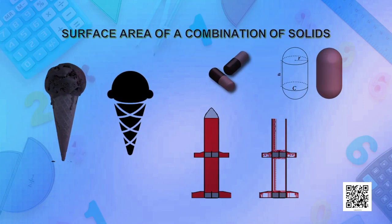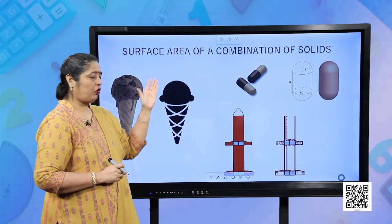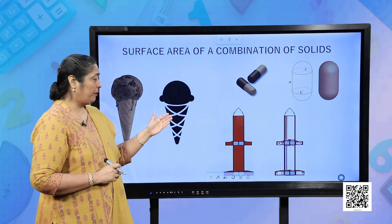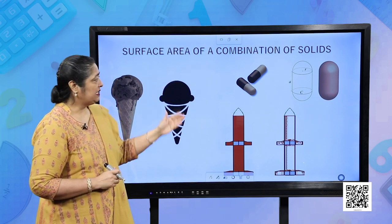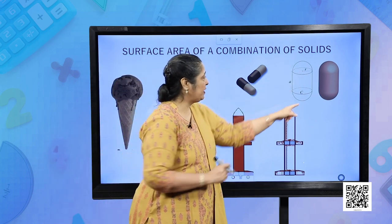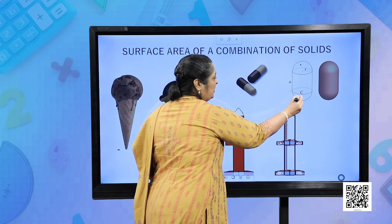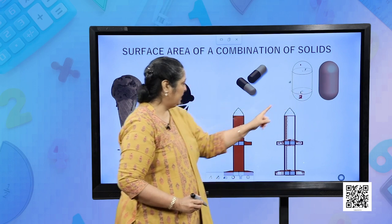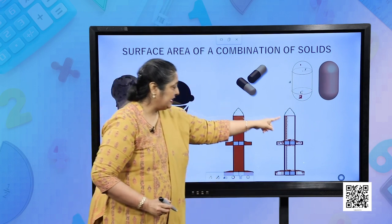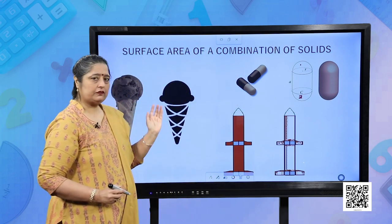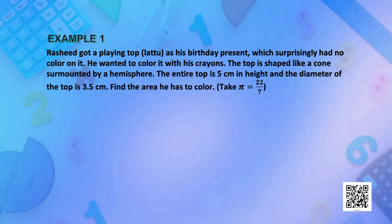Now we have the area of combination of shapes. For example, an ice cream cone is a combination of a cone and a hemisphere. A capsule is made of two hemispheres with a cylinder in between. A toy rocket is a combination of a cylinder and a cone. Let us see how we can apply these formulas to combinations of solids.